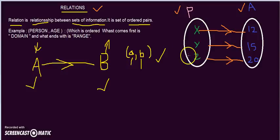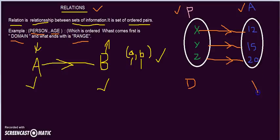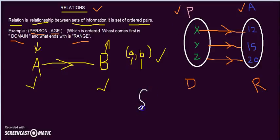The first element, which we call the domain, always comes from the first set. The second element, which we call the range, comes from the second set. So for my example, the person set is my domain and the age set is my range. Now, how do I write the ordered pairs? Relations are a set of ordered pairs where the first element should be from the domain and the second element should be from the range.